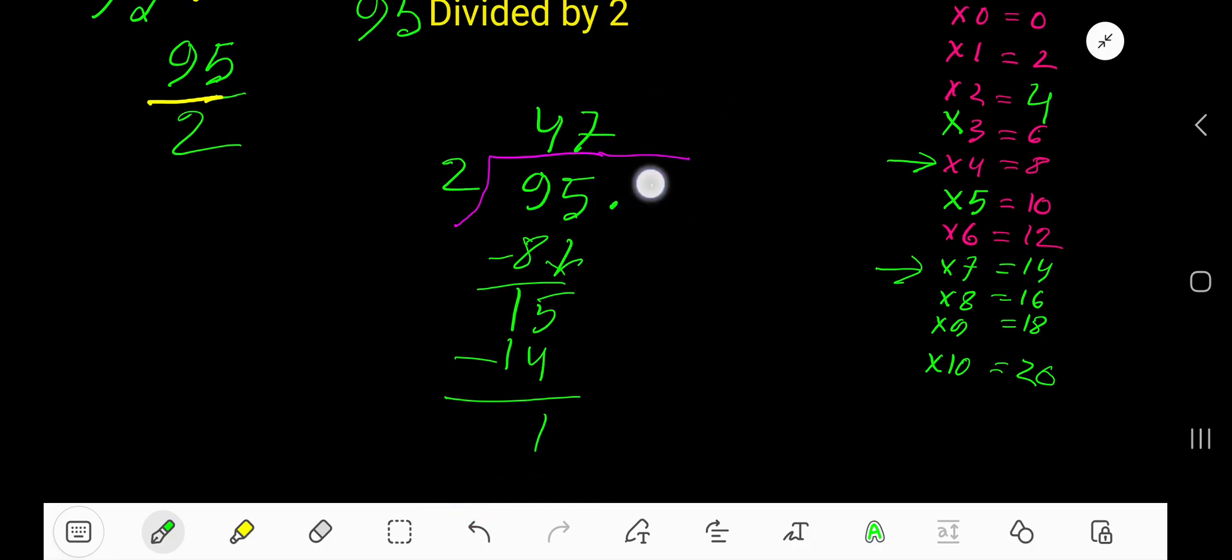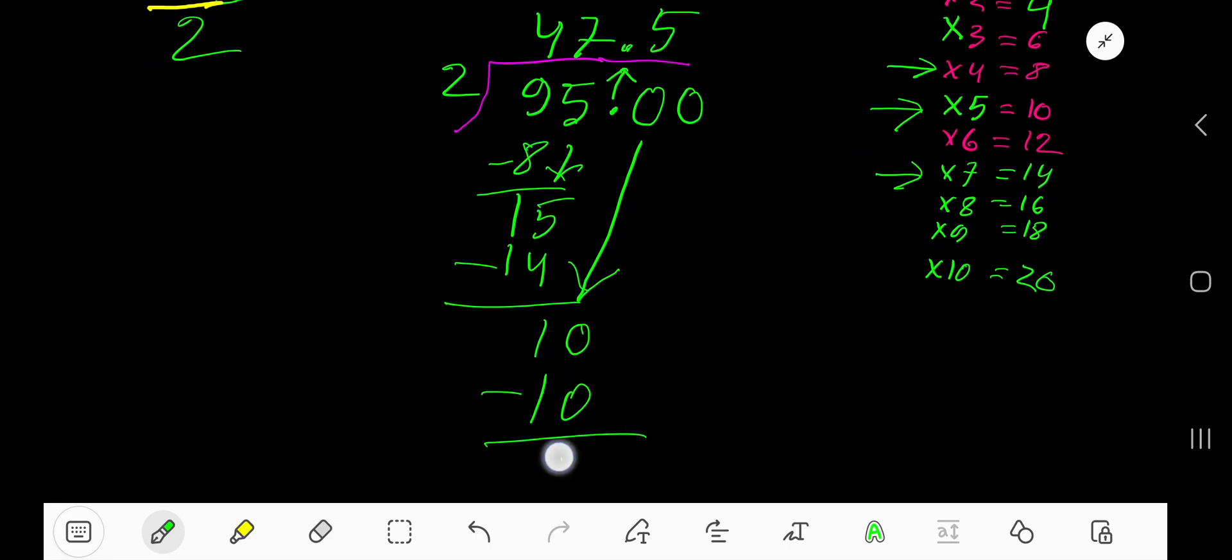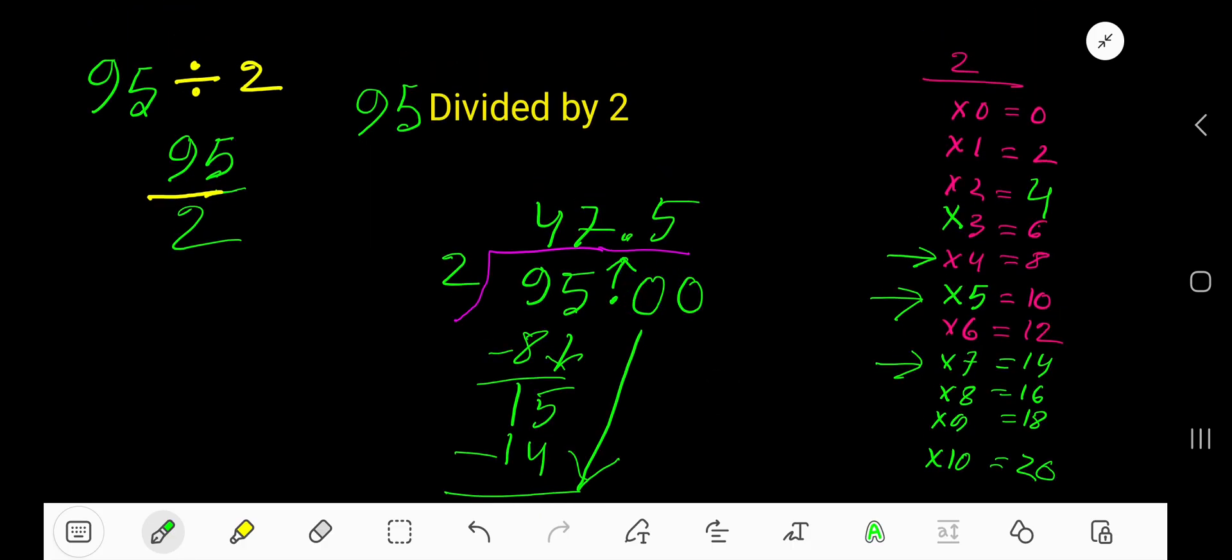Just take here decimal and you are allowed to take any number of zeros. Bring down the first zero, but before that, as a decimal, decimal must come to the quotient directly. 2 goes into 10 how many times? 2 goes into 10 five times. 5 times 2 is 10. Subtract 0. So 47.5 is your answer.